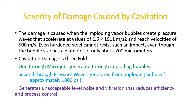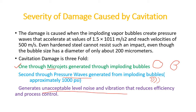Cavitation damage is mainly threefold: first, through micro jets generated by imploding bubbles; second, through pressure waves of approximately 1000 psi generated when bubbles implode; and third, it also generates an unacceptable level of noise and vibration that reduces efficiency and process control.